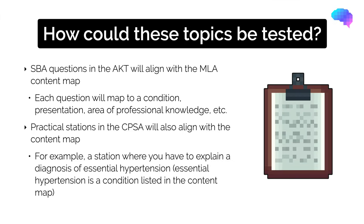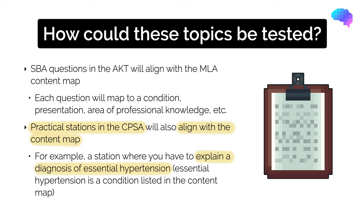Hopefully now you have a clearer idea of the topics which could be tested as part of the UK MLA. Questions in the AKT will align with the UK MLA content map, so each question will likely map to either a condition, a presentation, or an area of professional knowledge. In the CPSA, the practical stations you complete will also align with the content map — for example, you could have a station where you explain a diagnosis of essential hypertension to a patient, which is a condition listed in the content map. You can see why the content map is such an important document for guiding your preparation.